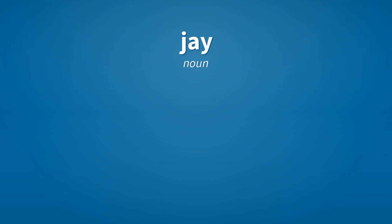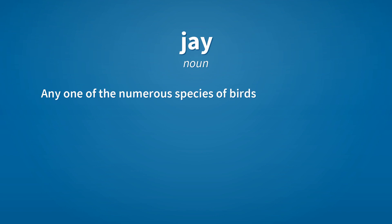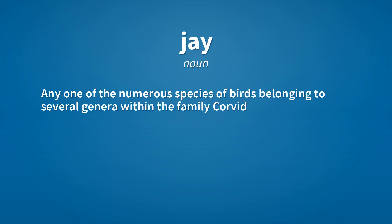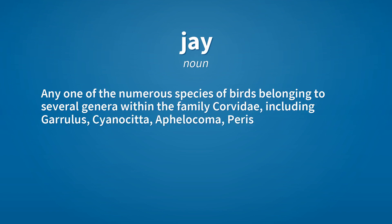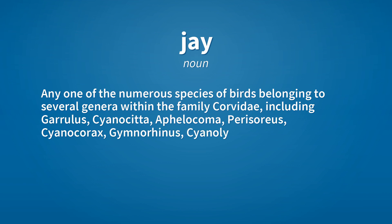Jay. Noun. Any one of the numerous species of birds belonging to several genera within the family Corvidae, including Gerilus, Cyanoceta, Apholocoma, Parasaurus, Cyanocorax, Gymnarinus, Cyanolica, Tillostomus, and Calloceta.